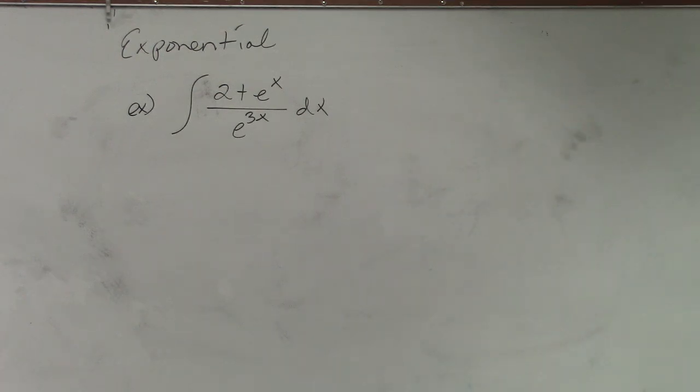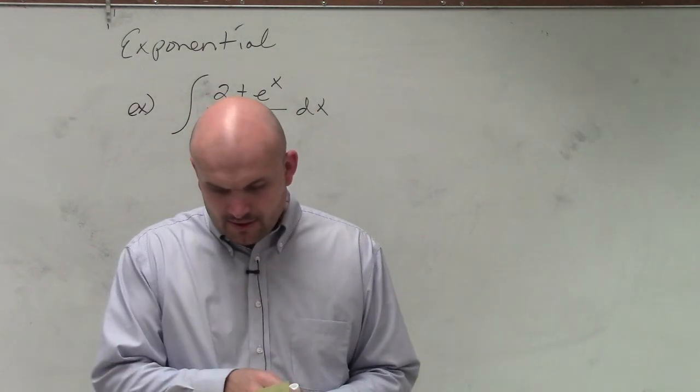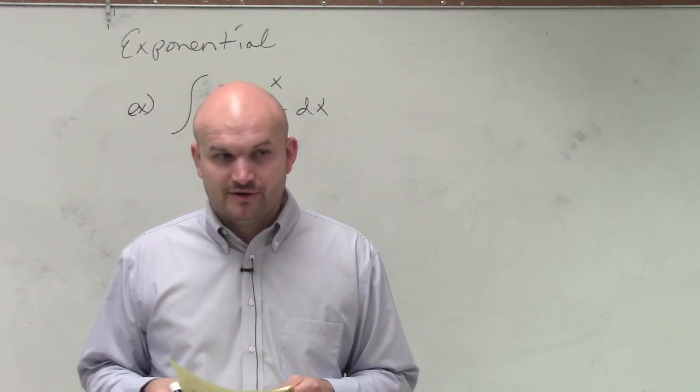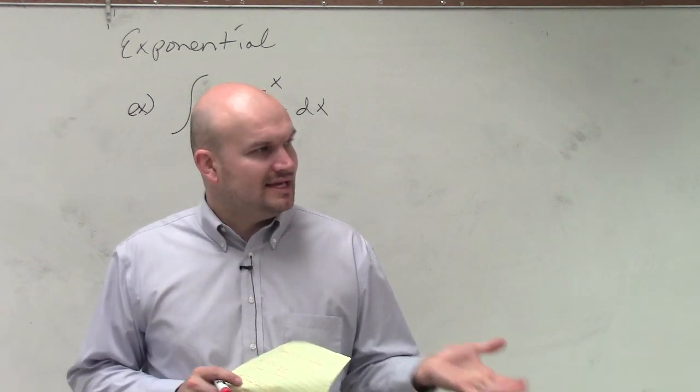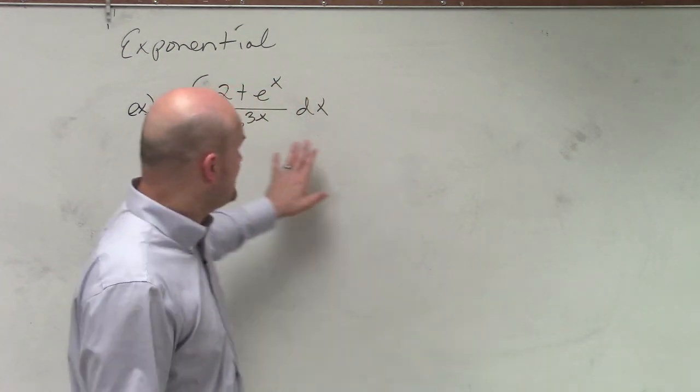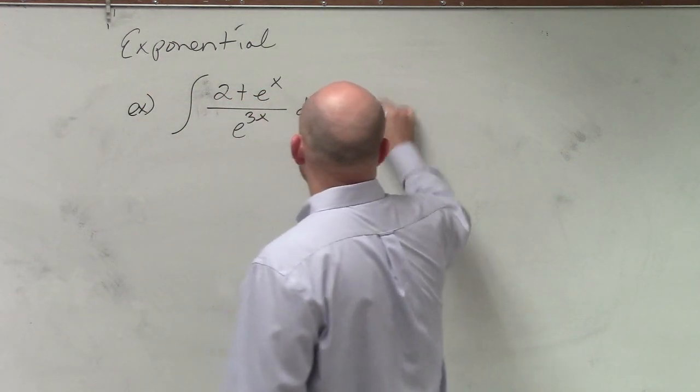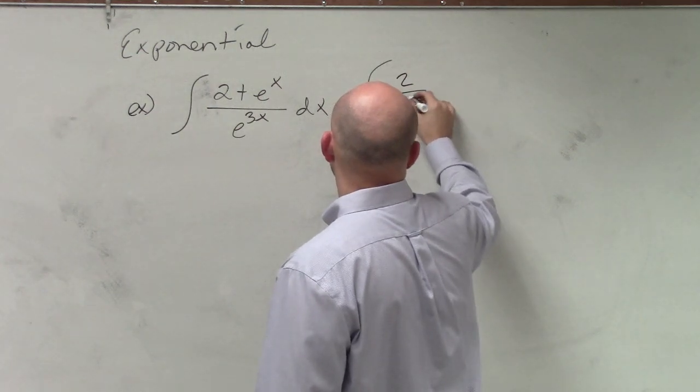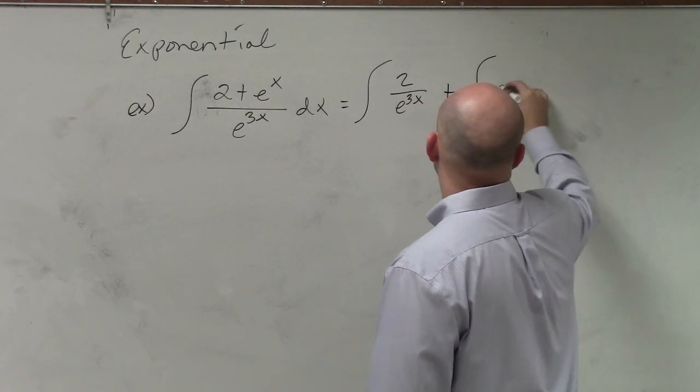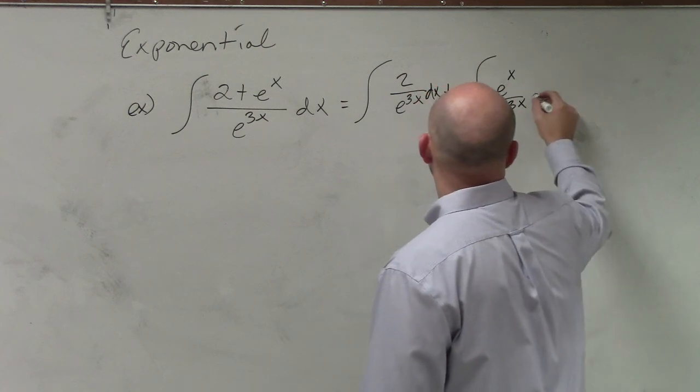So when I look at a problem like this, a couple things that we kind of notice or what we can do. Again, our immediate thing is always to want to go u-substitution, u-substitution, u-substitution. Right? But remember, if it's possible to simplify something, we can definitely do that. Think about it. I could rewrite this as 2 over e to the 3x plus e to the x over e to the 3x dx.